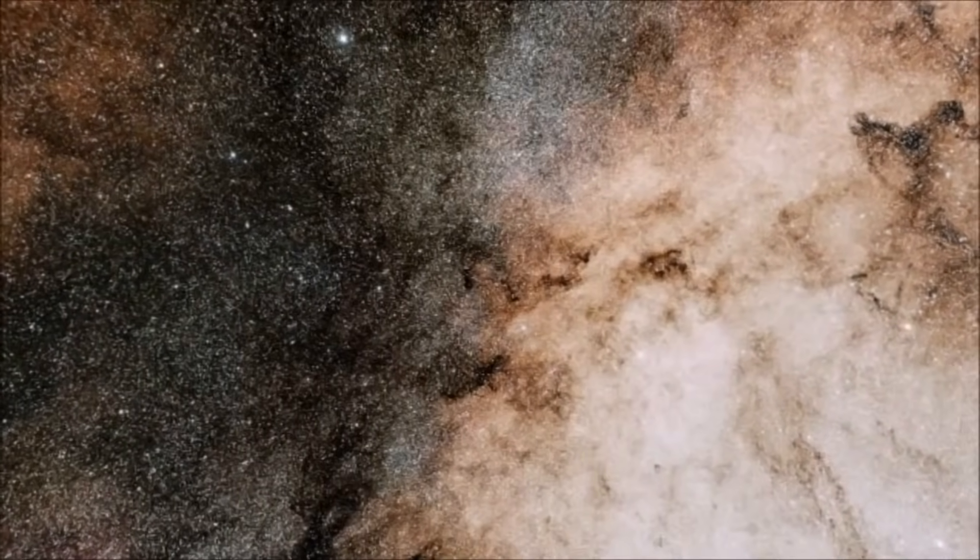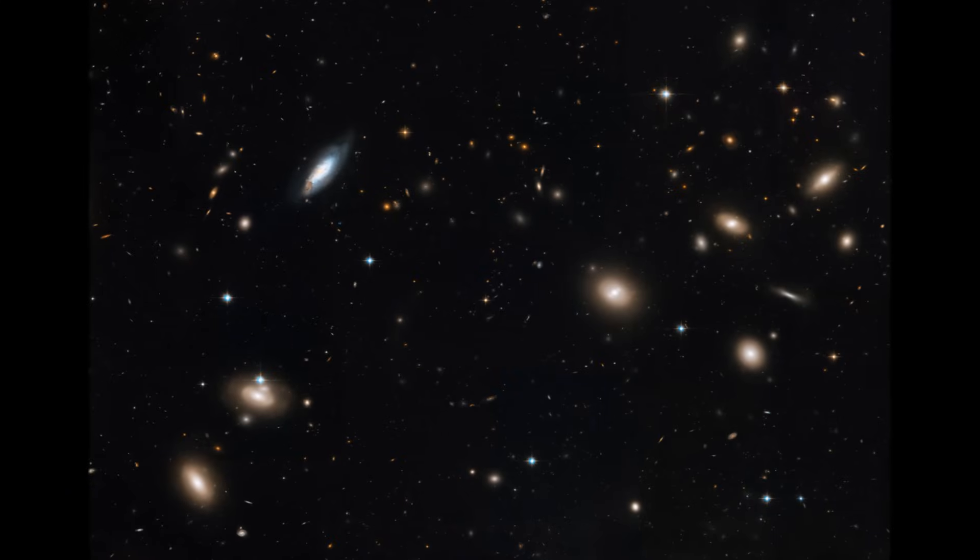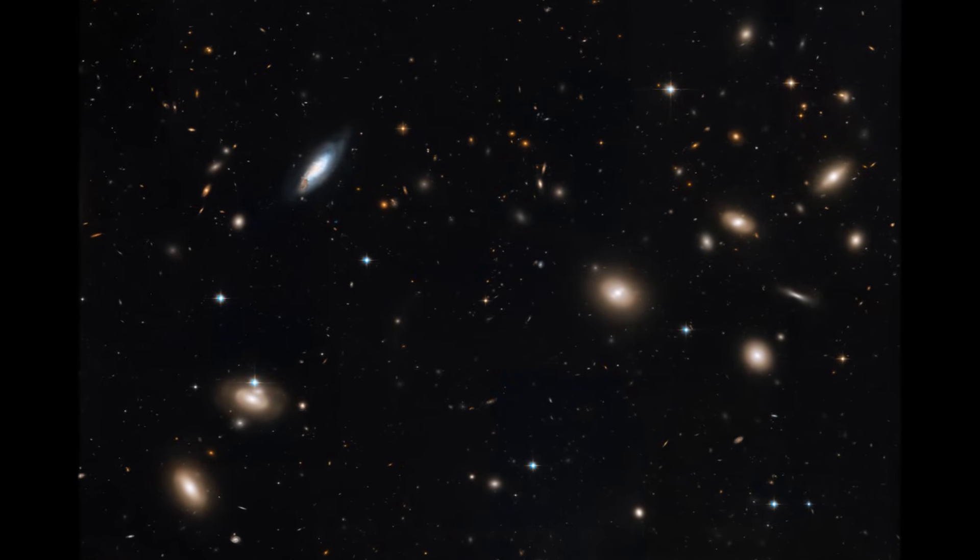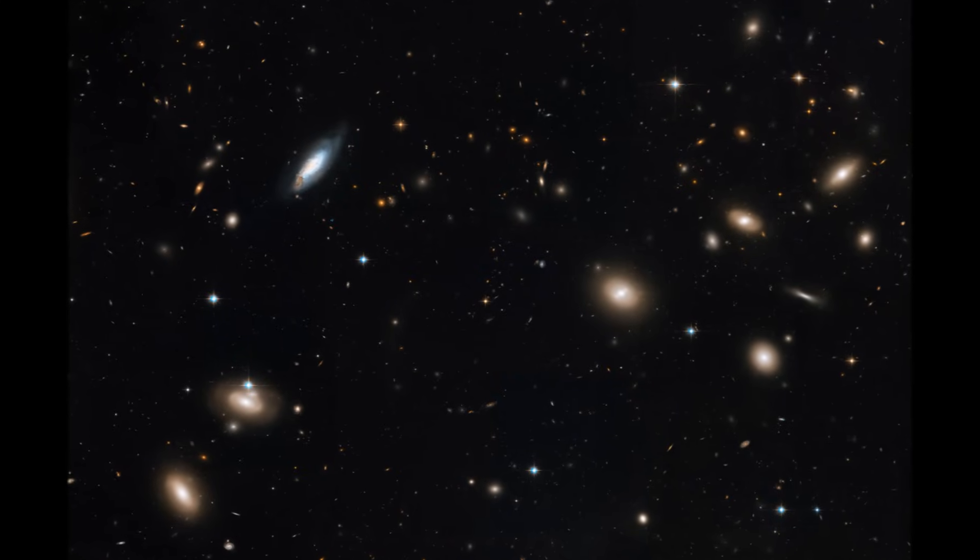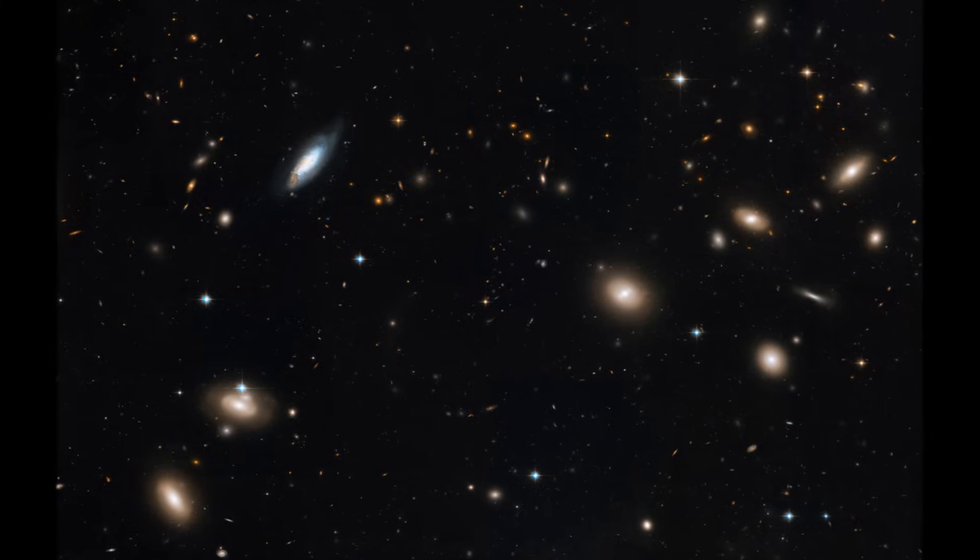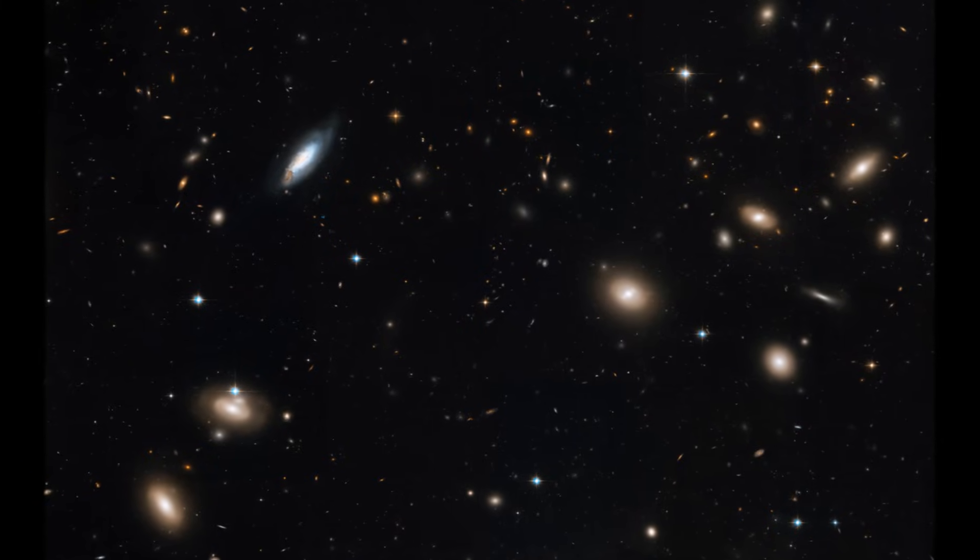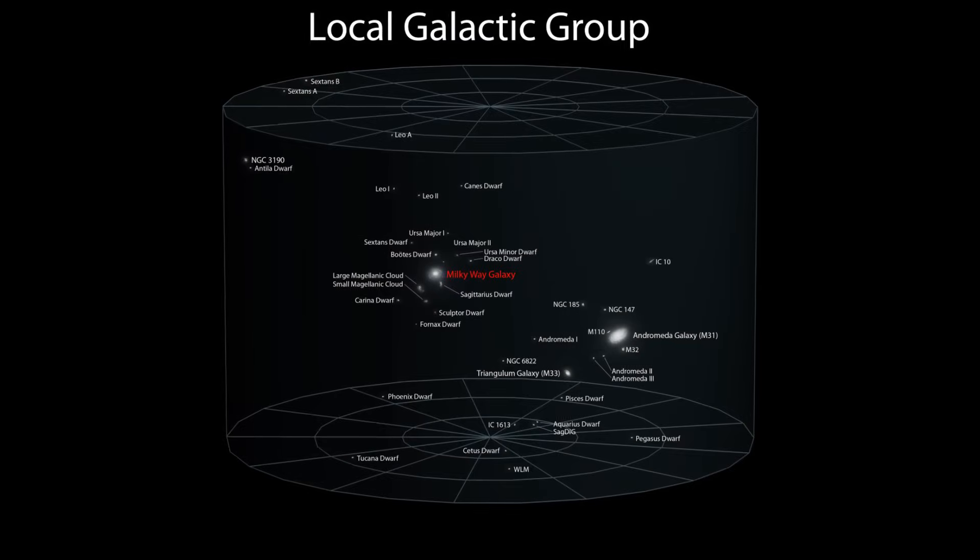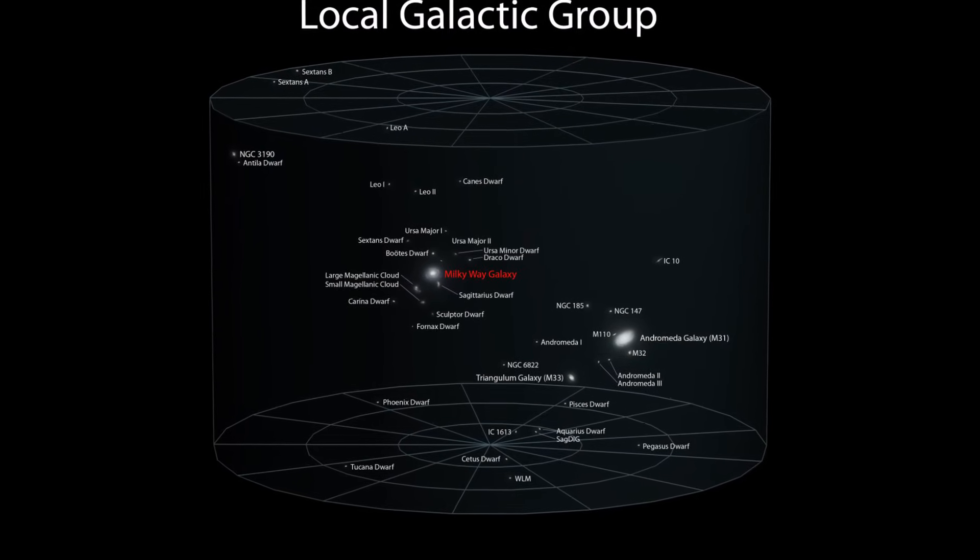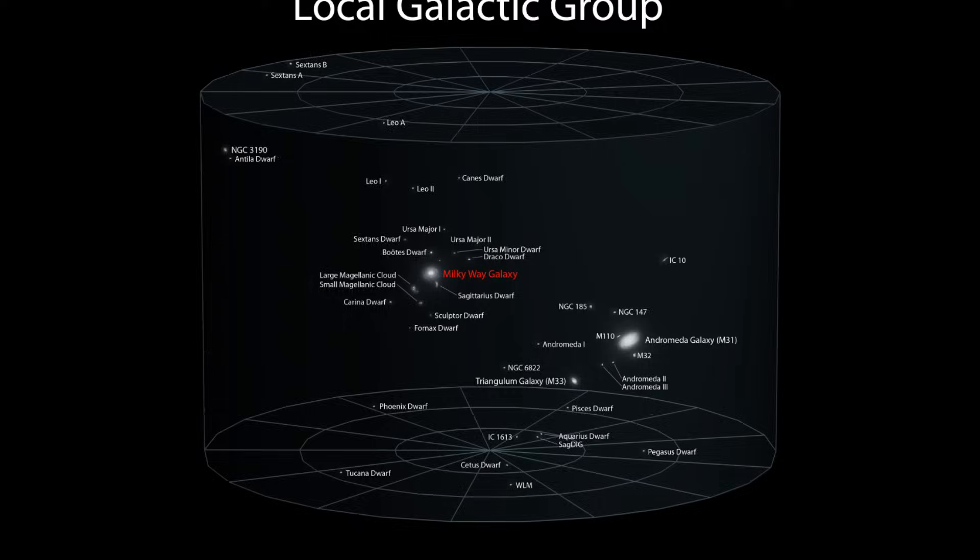Although it is massive, the Milky Way is not alone in the sky. It's part of a collection of other galaxies called the Local Group, made of about 50 galaxies nearby to ours. The Local Group is estimated to be at least 10 million light-years across.